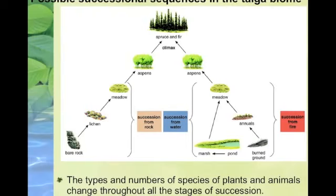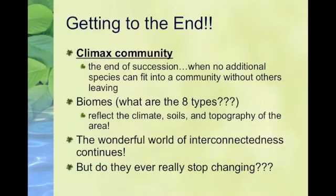Instead of having lichen, a fire succession already has soil, so it just has the annuals. When it actually gets to the end, it is known as a climax community — when nothing can enter without another species exiting. Those are what are known as your biomes. You have eight different biomes, and those are what make an ecosystem unique. All of your abiotic and biotic factors in each biome give it those special interactions, and those are your climax communities — everything connects and flows.